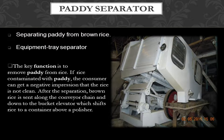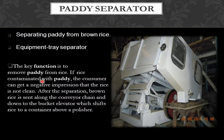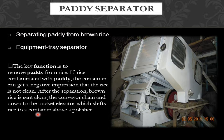The next step is the paddy separator. Separating paddy from brown rice is the main function of this equipment, called the tray separator. The key function is to remove paddy from rice — if rice is contaminated with paddy, the consumer gets a negative impression that the rice is not clean. After separation, brown rice is sent along a conveyor chain to a bucket elevator which shifts rice to a container above the polisher.